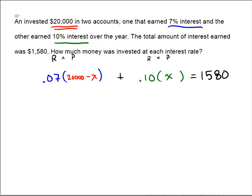And now we're in algebra land. So we will distribute in the first case, that's 0.07 times 20,000, which is 1,400 minus 0.07x plus 0.1x equals 1,580.